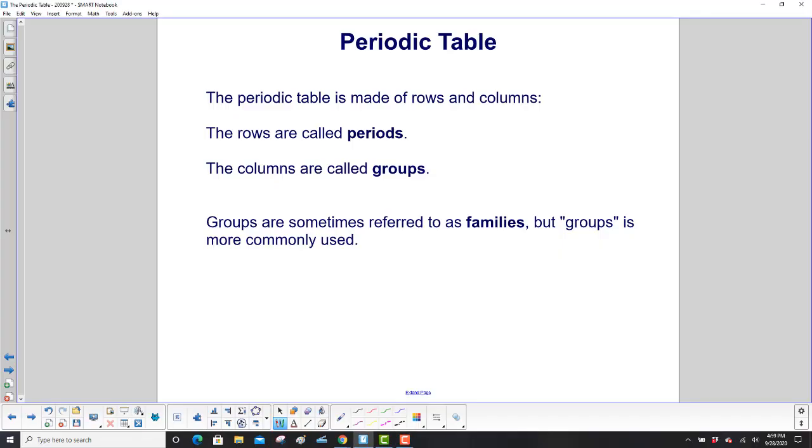The periodic table is made up of rows and columns. The rows, which go this way, horizontal, are called periods, and the columns are called groups. Groups are sometimes referred to as families, but groups is more commonly used.